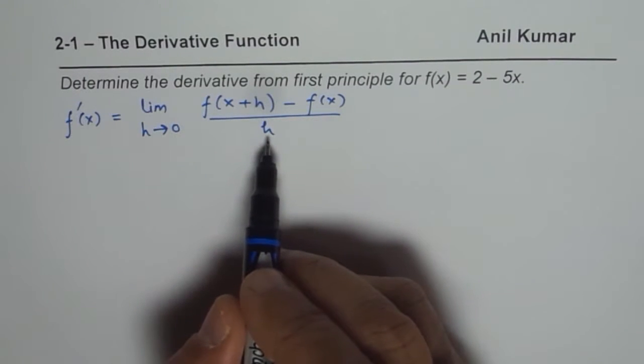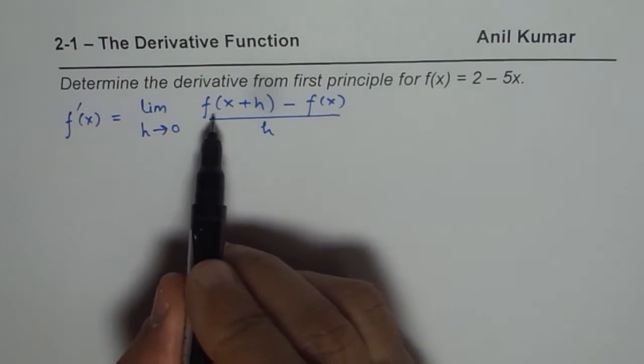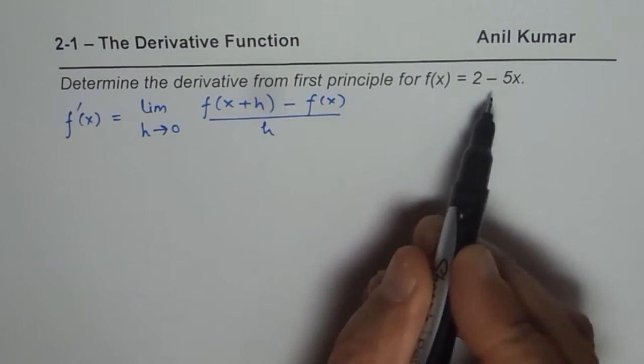If the limit does not exist for any particular point, then at that value of x, the function is not differentiable. So let's begin figuring out what is f of x plus h and what is f of x for the given function.